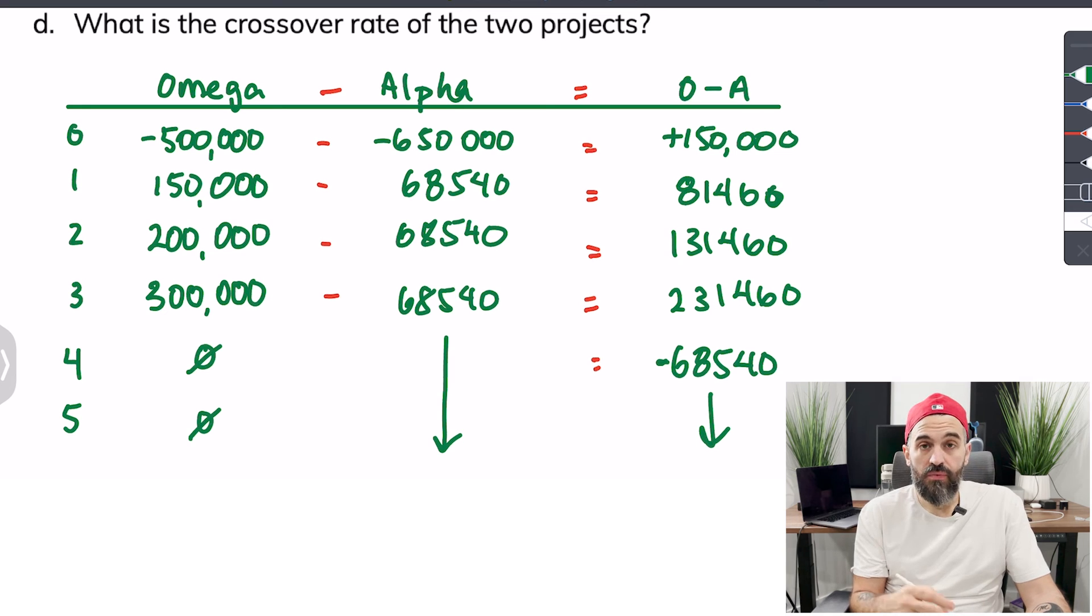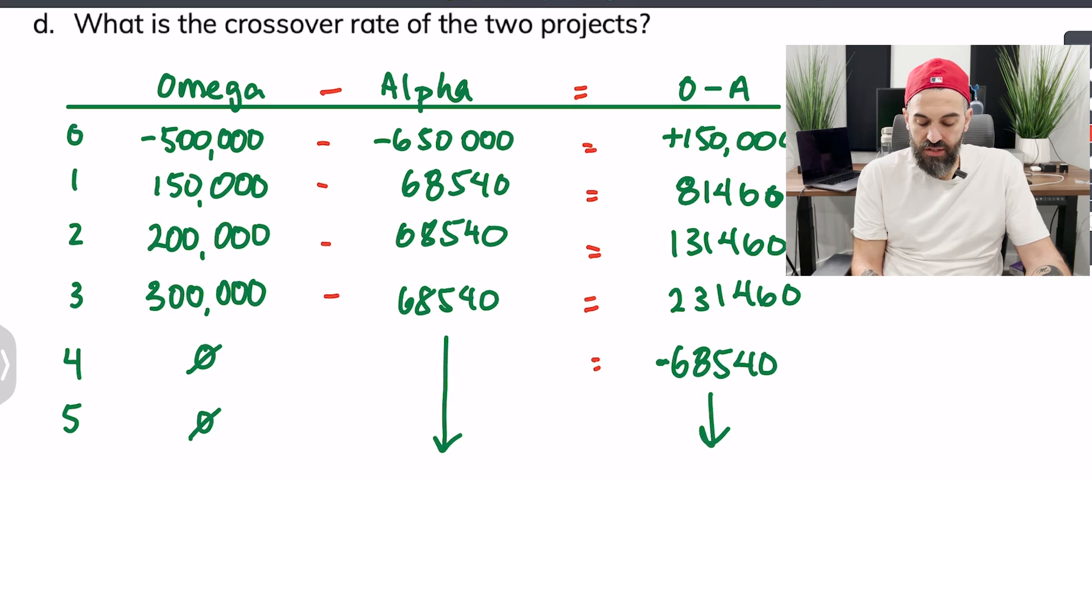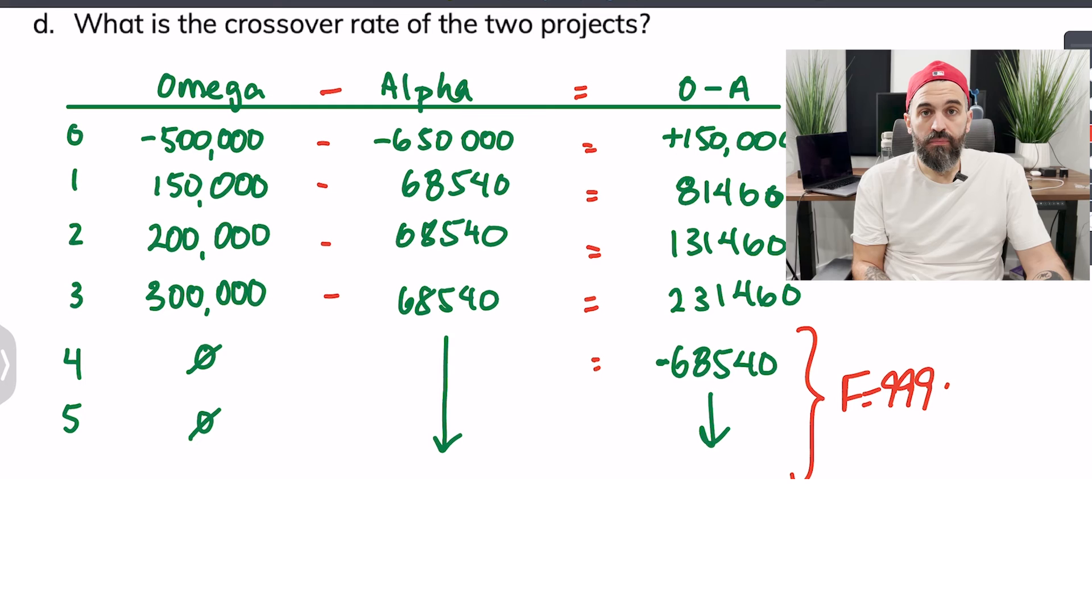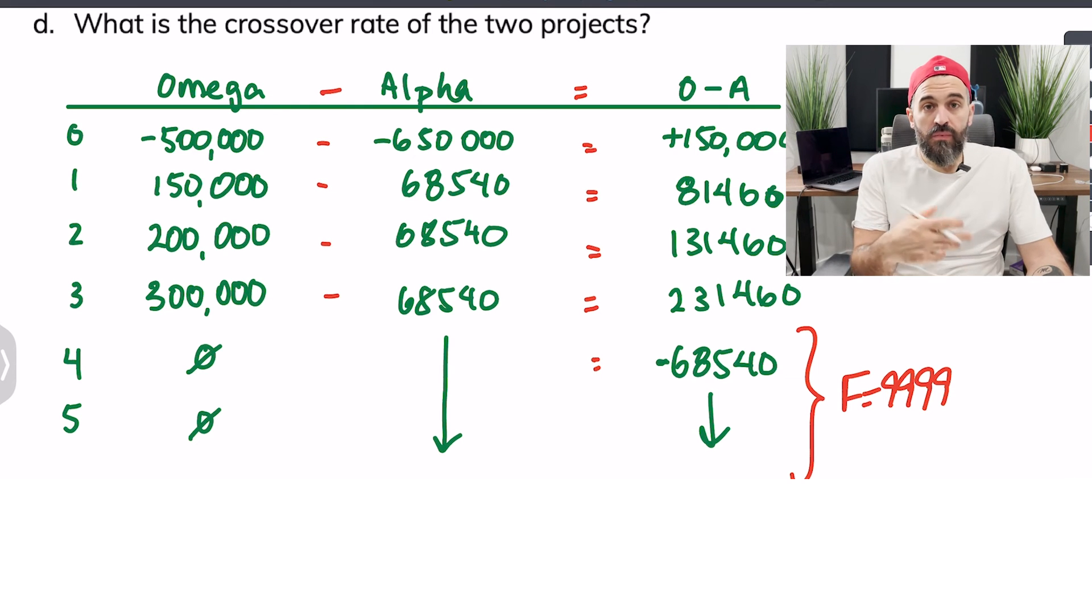So how we're going to enter that into the calculator is we're going to tell the calculator that this has a frequency of 9,999.